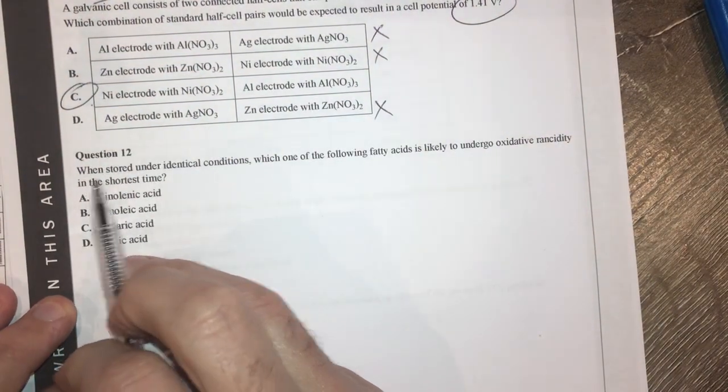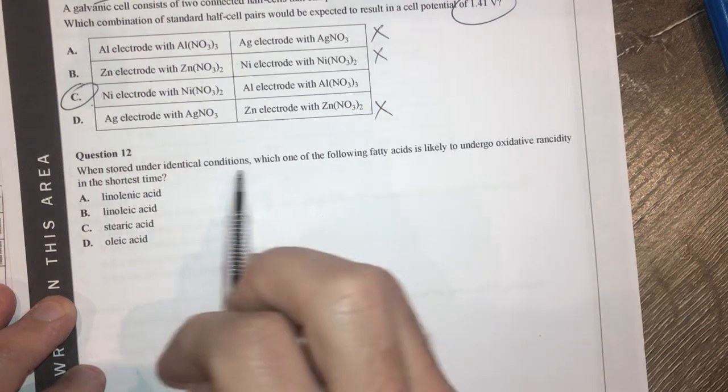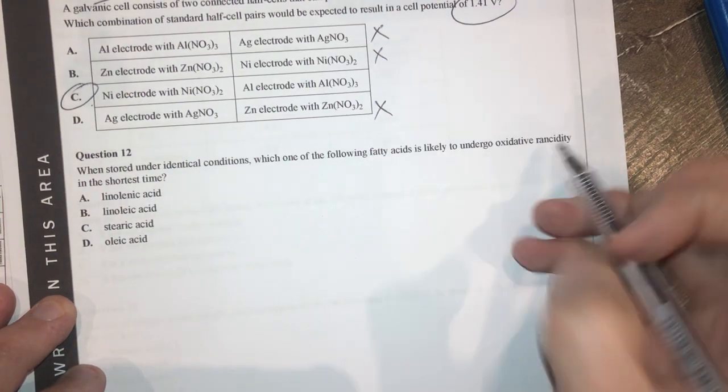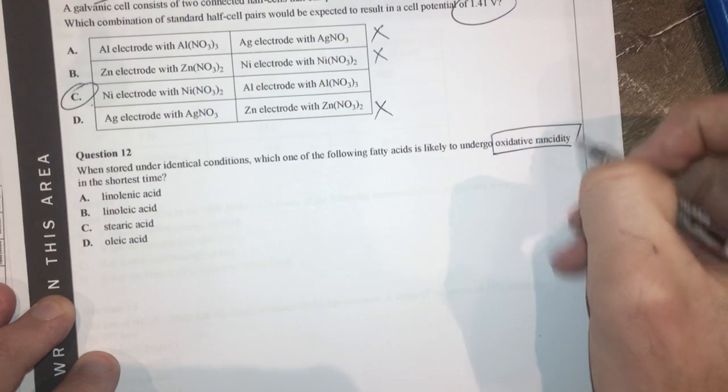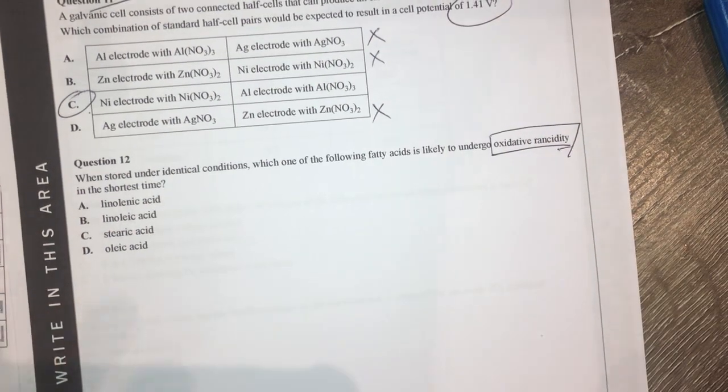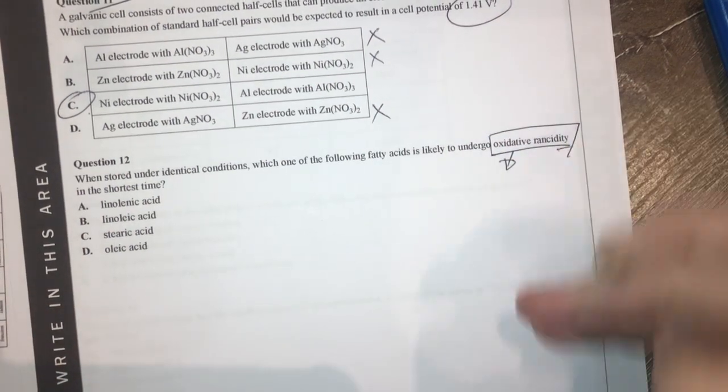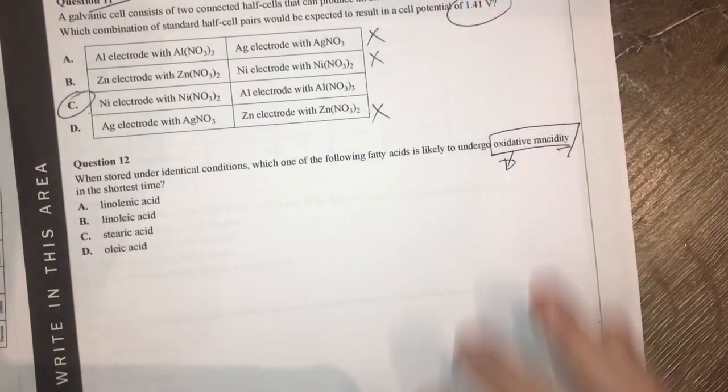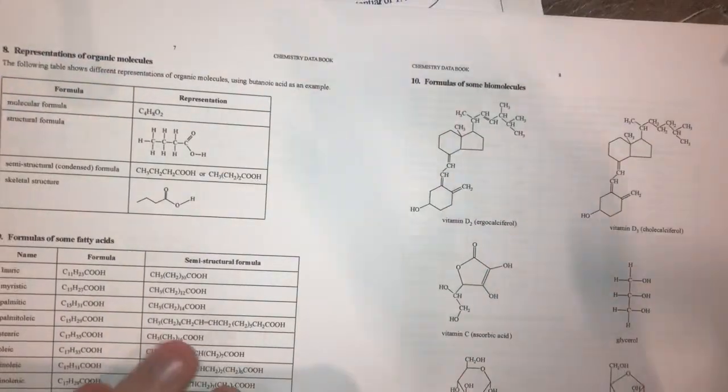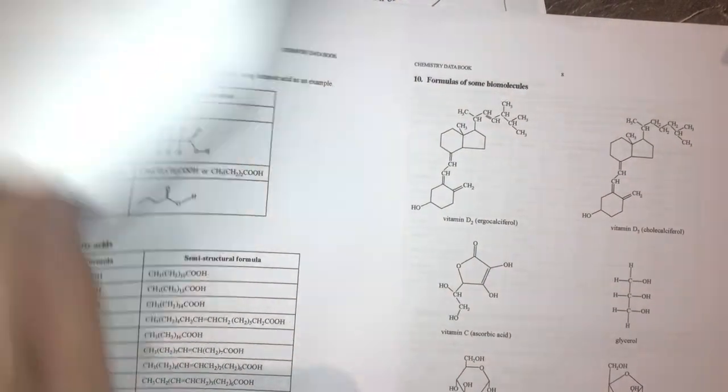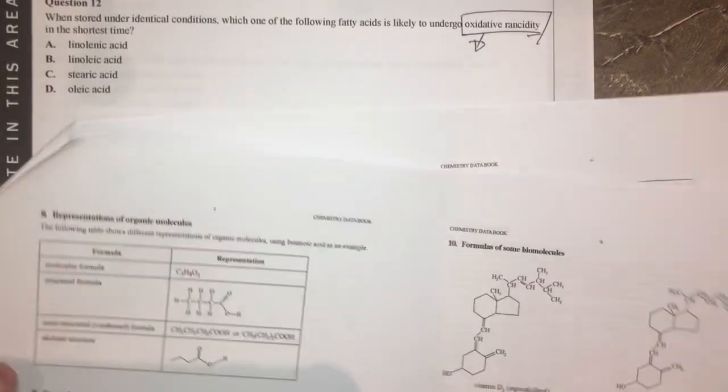Question 12. When stored under identical conditions, which of the following fatty acids is likely to undergo oxidative rancidity in the shortest amount of time? This is to do with the breakdown and oxidation. It mainly happens around double bonds. So let's have a look using our handy double clip at which ones have double bonds.